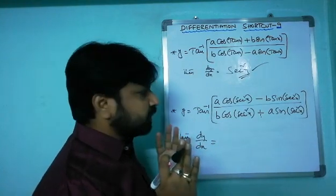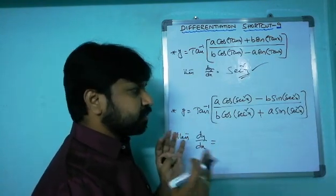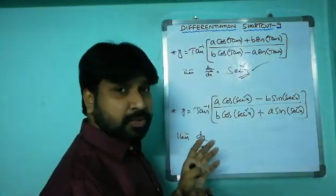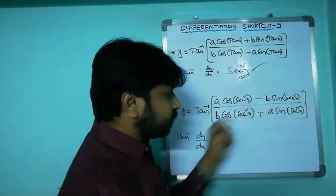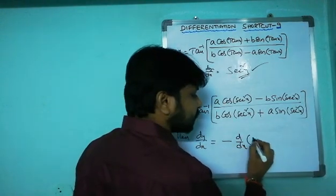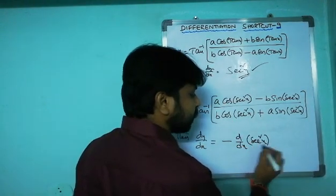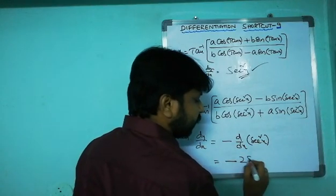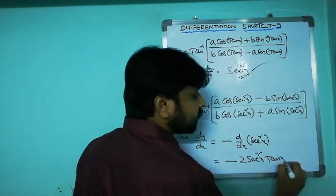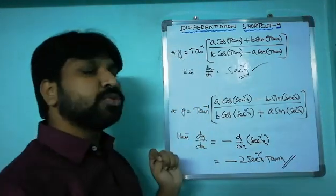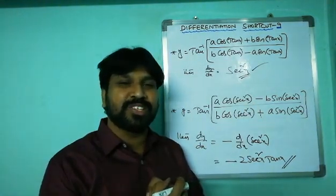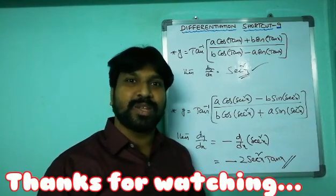Next example: y = tan inverse of [a·cos(sec²x) - b·sin(sec²x)] / [b·cos(sec²x) + a·sin(sec²x)]. Here f(x) = sec²x but the numerator has a minus sign, so dy/dx = -f'(x). The derivative of sec²x is d/dx(sec²x) = 2secx · secx·tanx = 2sec²x·tanx. So dy/dx = -2sec²x·tanx. That's all for today's shortcut — thank you very much friends!